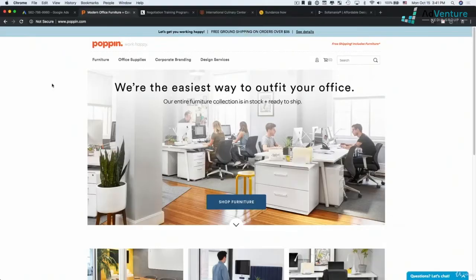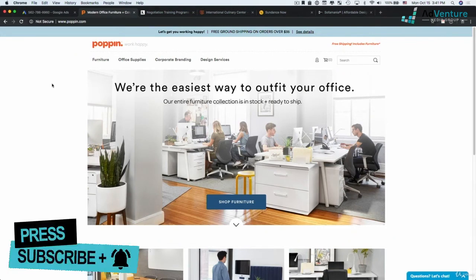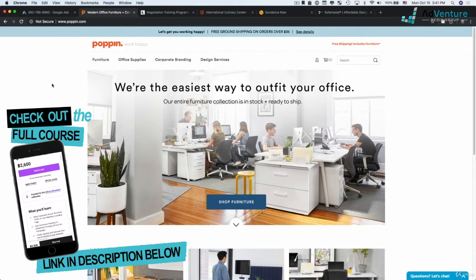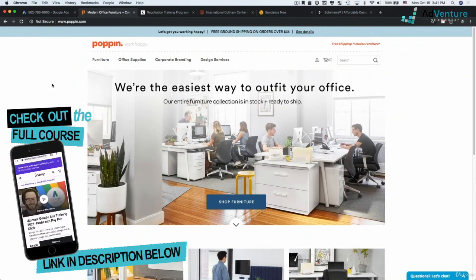Here we are at poppin.com. This is a website which we'll use as a template, and imagine we're building out a Google Ads search campaign for Poppin, and we don't know where to start. They sell lots of different types of office furniture and supplies and different categories and all sorts of things, and we want to figure out how to separate out our campaigns.